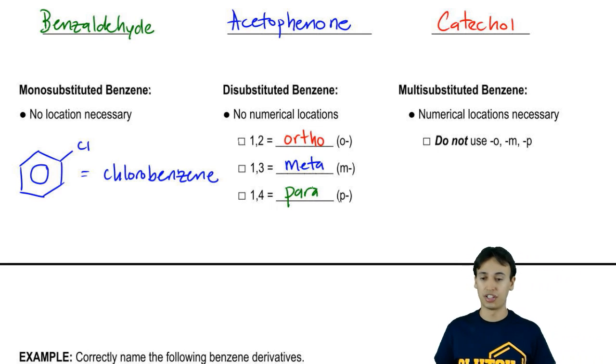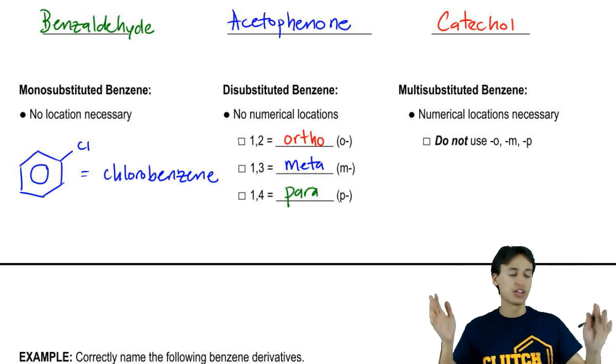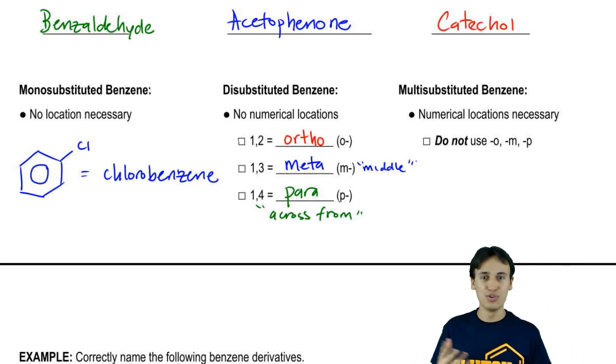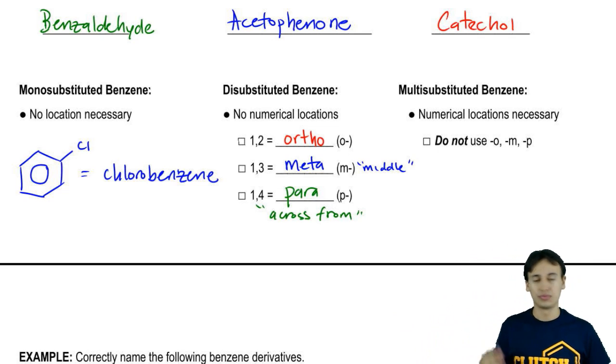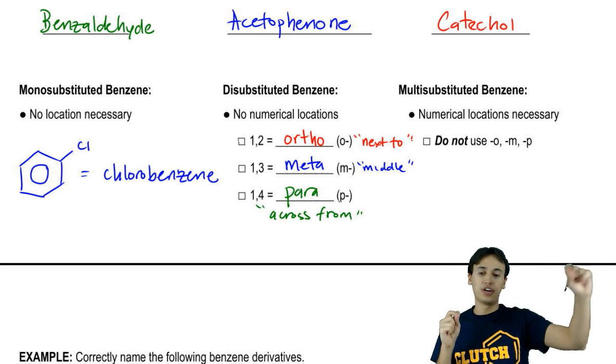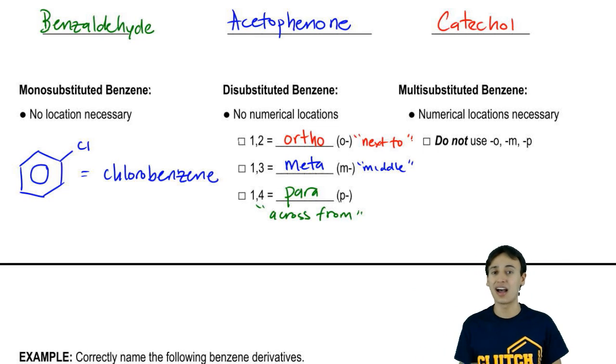Now these even get shorter acronyms. So instead of ortho, we would say O, meta would be M, para would be P. Now these words, they don't all make tons of sense, but para definitely means across from, so that helps. Meta means middle. It's something in the middle. Ortho doesn't technically mean next to. It didn't mean that before, but these days we'll say that's what the definition is. Next to. Ortho would be next to each other, para would be across from each other, and meta would be in the middle. And those would be the numbers that would correlate to them. So this is the way that you name a disubstituted benzene.